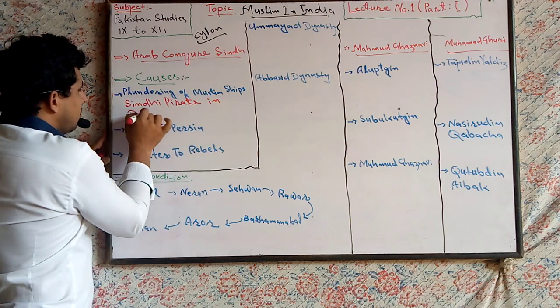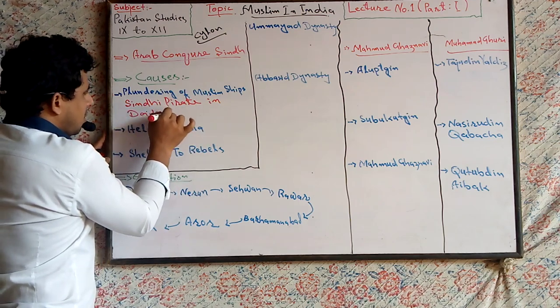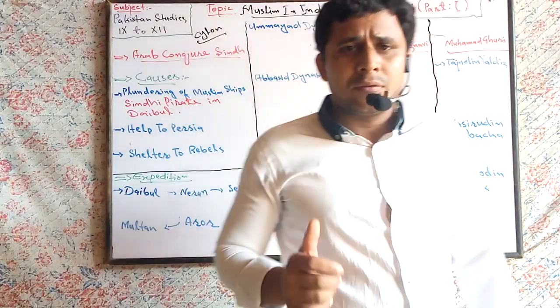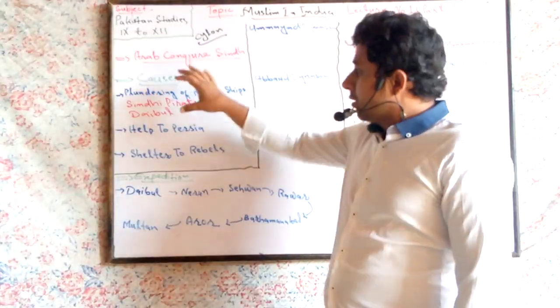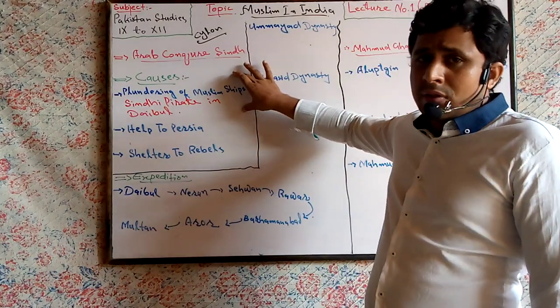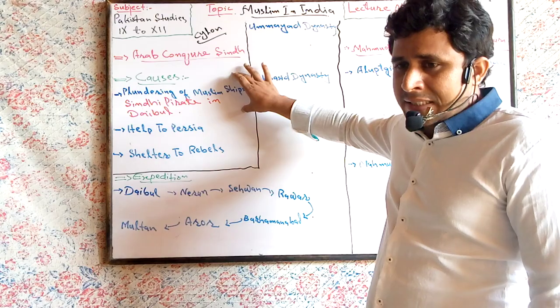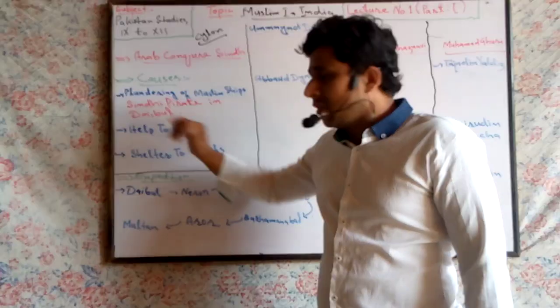Sindhi pirates are sea robbers in Dabble. Dabble is a seaport of Sindh. Muslim ships full of widows, orphans, and valuable presents were plundered by Sindhi pirates in Dabble.